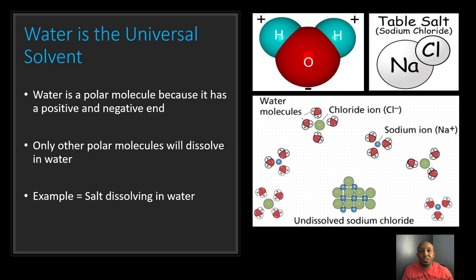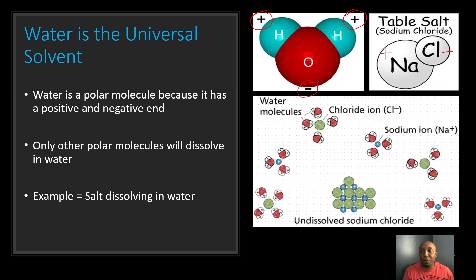Now let's take a closer look at water. Water is considered to be the universal solvent. Water is a polar molecule because it has a positive and negative end. If we look at this water molecule, the hydrogen ends are positive while the oxygen end is negative — that's what makes it polar. Only other polar molecules will dissolve in water. For example, table salt or sodium chloride: the sodium has a positive charge while the chlorine has a negative charge, so this is another polar molecule because it has a positive and negative end.